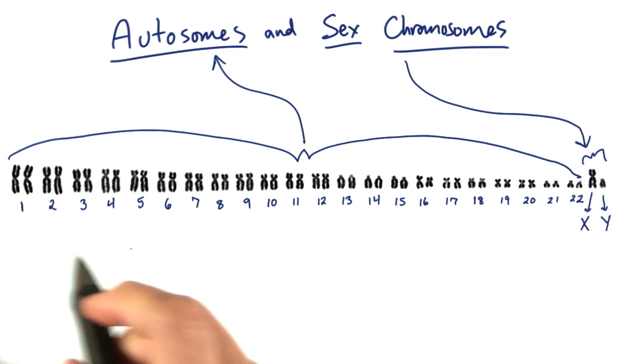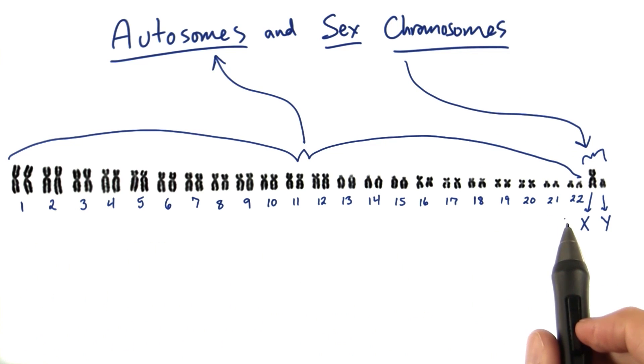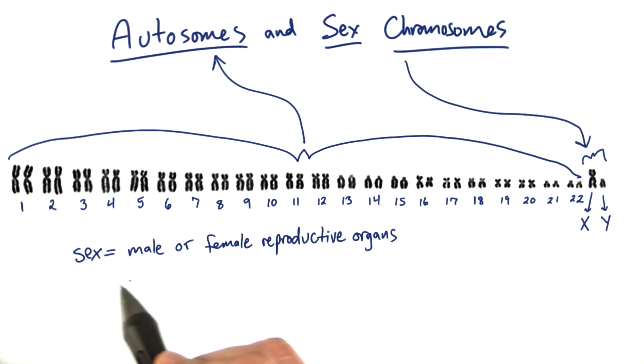All of the rest of the chromosomes are called autosomes. And the reason we make a distinction is because the sex chromosomes, X and Y, determine the sex of the individual. What we mean by sex is whether or not the individual has male reproductive organs or female reproductive organs.